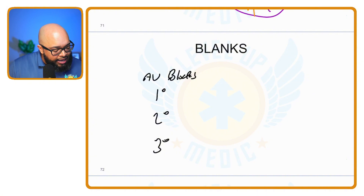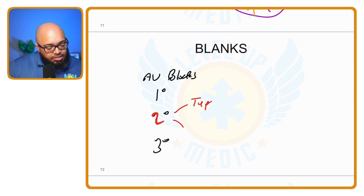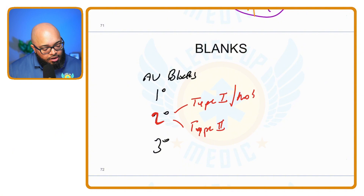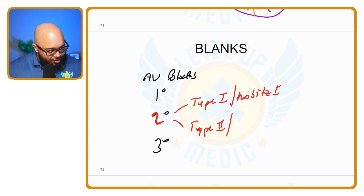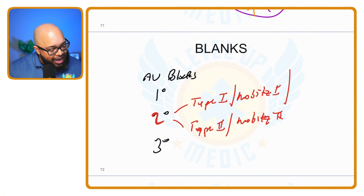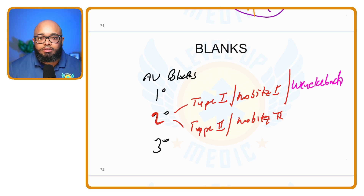However, for second degree, there are actually two types: type one and type two. Type one also has a different name known as Mobitz I, and type two is also known as Mobitz II. Depending on which book and what year it was published, they'll be named different things. Only for second degree type one or Mobitz I, it also has the extra name Wenckebach, named after Dr. Wenckebach.